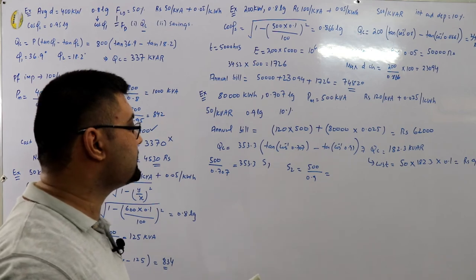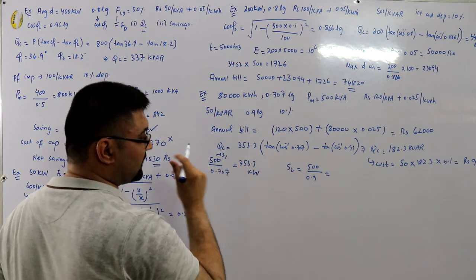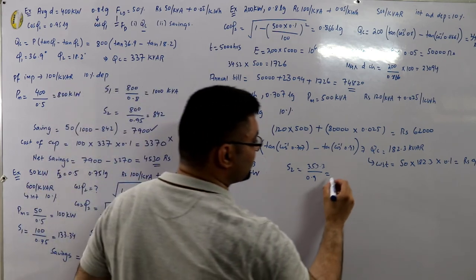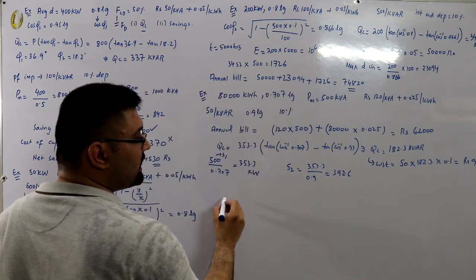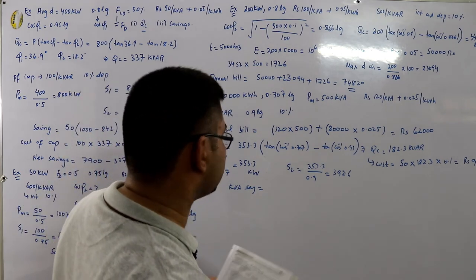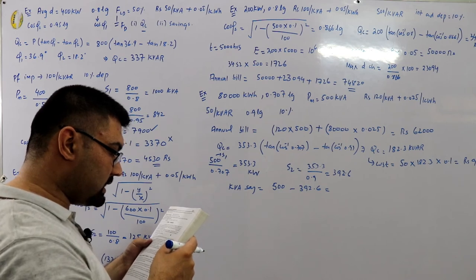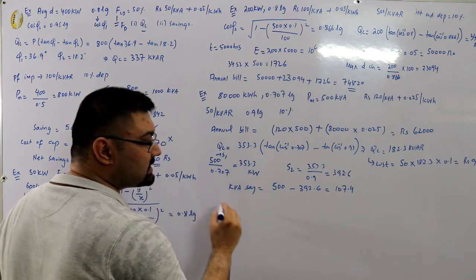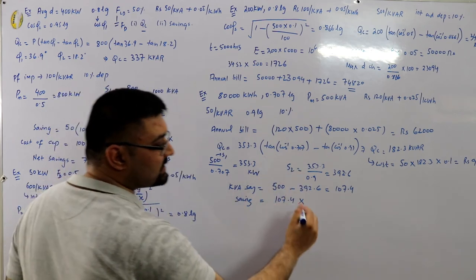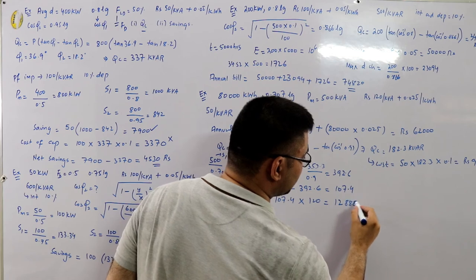kVA has reduced from the initial 500 to the new value of 392.6, a reduction of 107.4 kVA. Saving from kVA reduction = 107.4 × 120 rupees per kVA = 12,888 rupees annually.